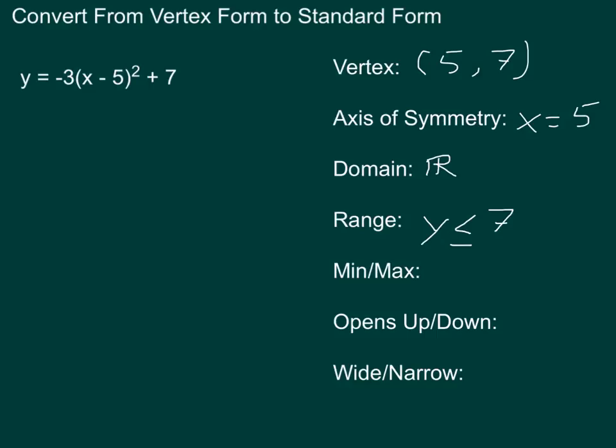Since it also opens down, it has a maximum. And not surprisingly, what is that maximum value? It's 7. We've already indicated how it opens, which is down. We can identify if it opens wide or narrow based on that -3. Since it's a number with an absolute value greater than 1, we know that it's going to be a little bit more narrow than a standard parabola. We can get all that information without doing any extra work just by looking at that equation.